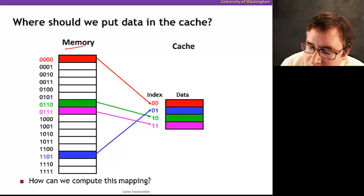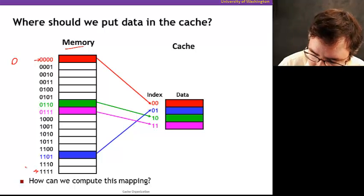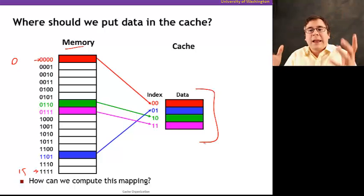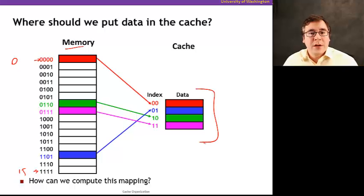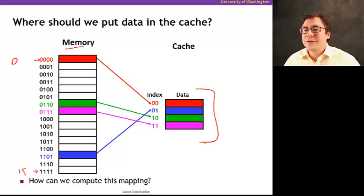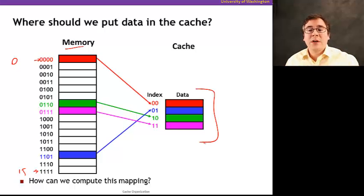Suppose that we have a very simple memory here whose addresses go from 0000 in binary to 1111 — from 0 to address 15. Here's our cache. As I said before, the cache holds a subset of memory, so the cache is going to be smaller than memory. They're fast because they're small — that's one of the main reasons. The technology in how they're built is also different.